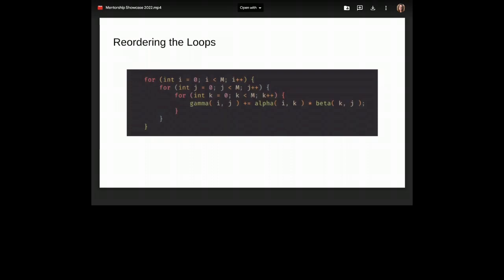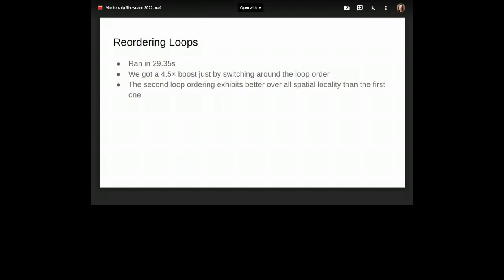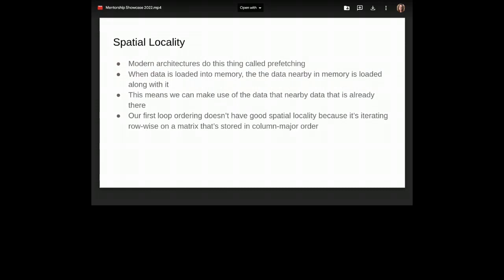We have three loops. And we can reorder them in three factorial ways. I'm not going to go through all the six different ways you could do that, because I already know the best way to do it. And it's this one. And what kind of performance do we get? We get, well, nearly five times, 5x boost. So what's going on here? Well, the second loop exhibits better spatial locality. So what is spatial locality?